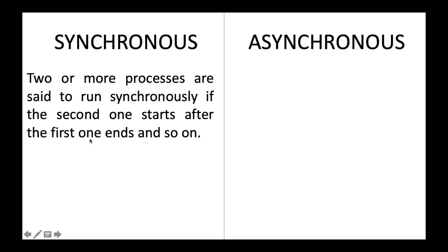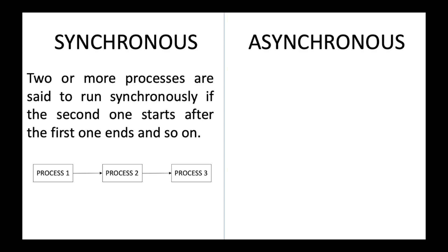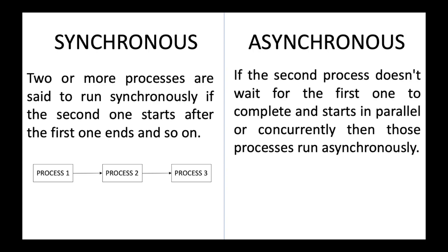The first topic is synchronous and asynchronous tasks. Two or more processes are set to run synchronously if the second one starts after the first one ends and so on — process 1 starts and ends, then process 2 starts, then process 3. However, if the second process doesn't wait for the first one to complete and starts in parallel or concurrently, then those processes run asynchronously.